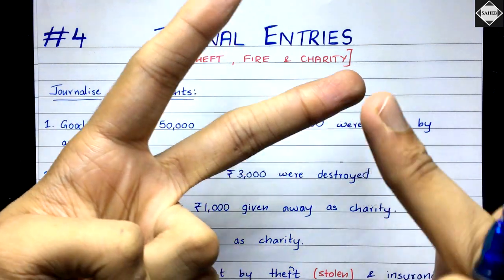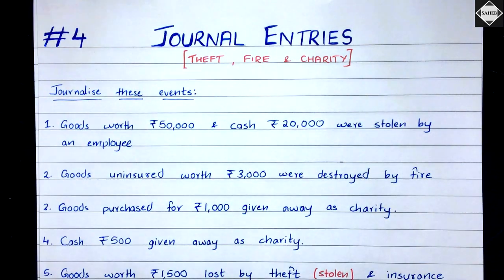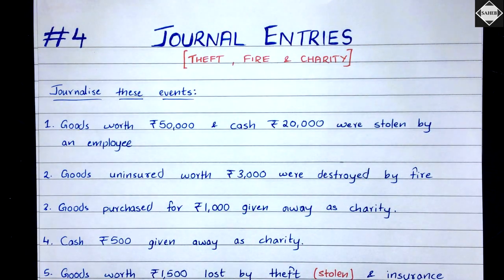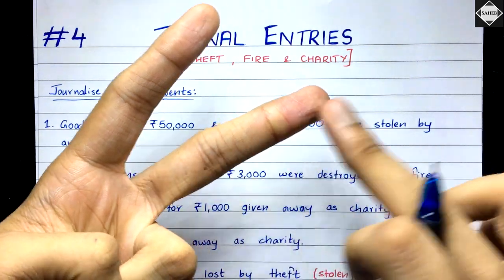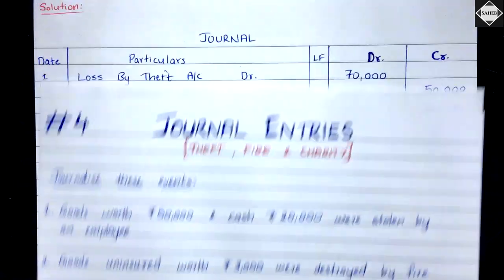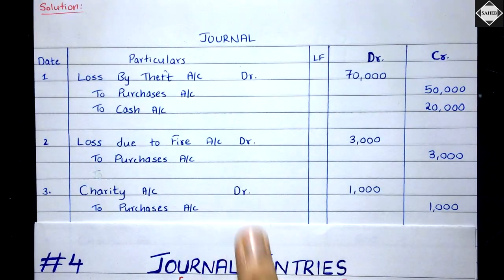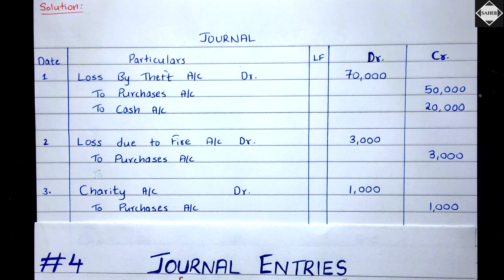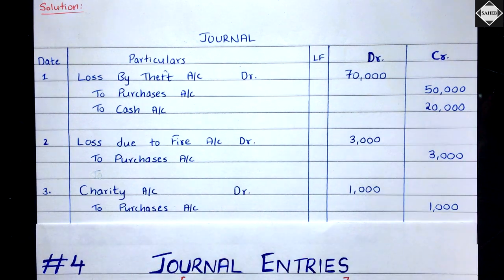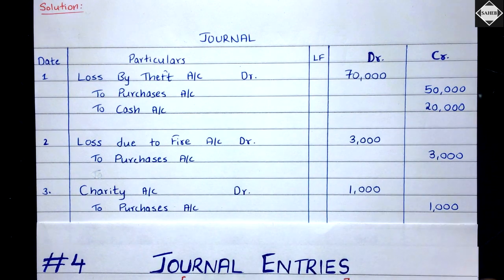We haven't got anything in return, so it's like a loss for us. To recognize the charity account, since it's an expense increasing, we debit it. Purchase account is decreasing so we credit it. The entry is: Charity Account debit 1,000 — we've given charity which is an expense and we've got nothing in return; to Purchase Account credit 1,000 for the goods that have gone out of the business.